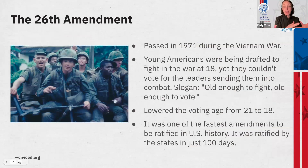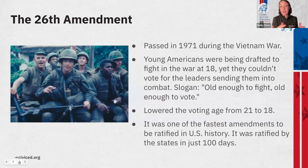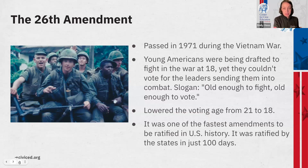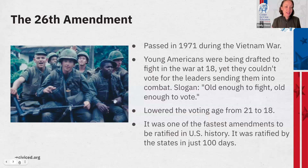At the point of the Civil War, 18-, 19-, and 20-year-olds were either voluntarily or drafted into the army but could not make decisions on the leadership of the country despite the enormous impact it had on their lives. The 26th Amendment passed in 1971 in the midst of the Vietnam War, when young Americans were again being drafted or voluntarily joining the army. The slogan that really pushed its passage was 'old enough to fight, old enough to vote.' This amendment lowered the voting age from 21 to 18, and it is one of the fastest amendments to be ratified in U.S. history — ratified by the states in just 100 days.